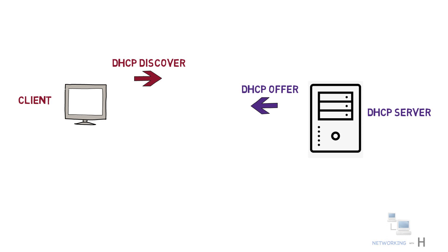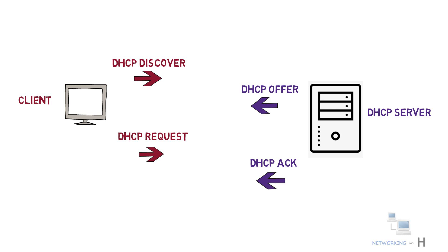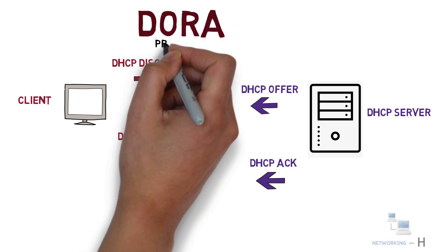Once the client receives the offer, it responds with a DHCP Request, indicating that it accepts the offered IP parameters. This message goes from the DHCP client to the DHCP server. The final message is a DHCP ACK, sent from the server to the client, acknowledging and confirming the client's acceptance of the offered IP parameters. This entire four-step process is also known as the DORA process.